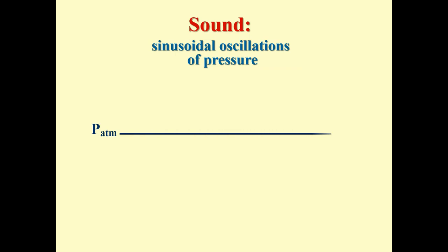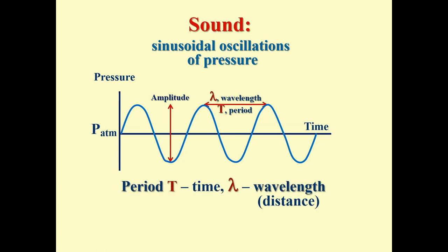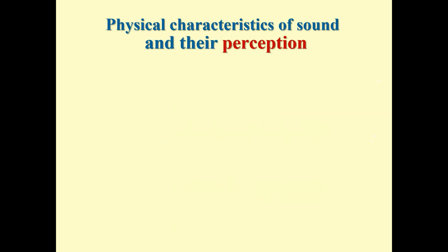If expressed in a figure, sound appears as oscillations of air pressure around the atmospheric level, looking like classical sinusoidal oscillations. This sound wave has characteristics such as amplitude and period (T) in time. Measured as distance, it makes the wavelength. Period and wavelength are proportional, and frequency can be calculated as inversely proportional to the time period. There is a connection between wavelength and frequency, which we will return to.